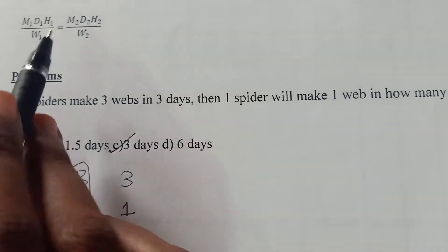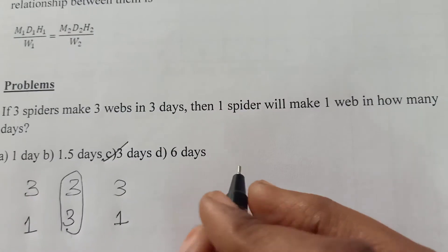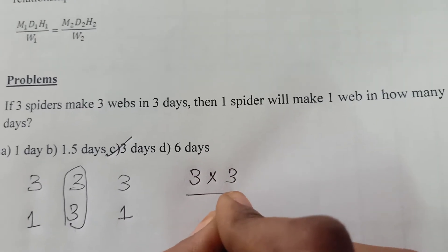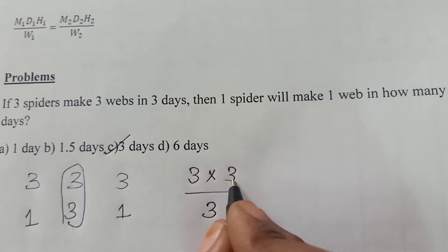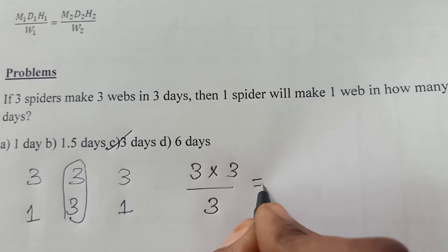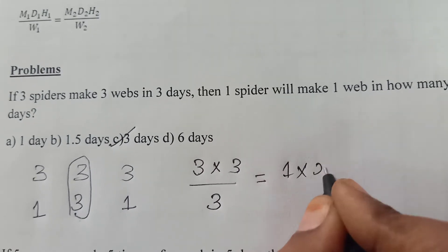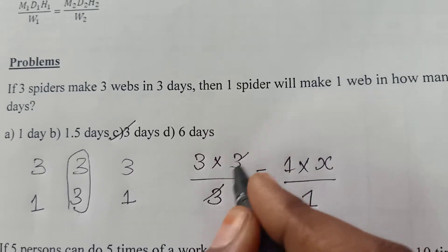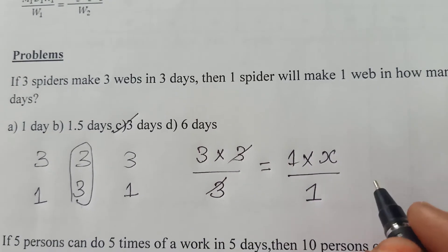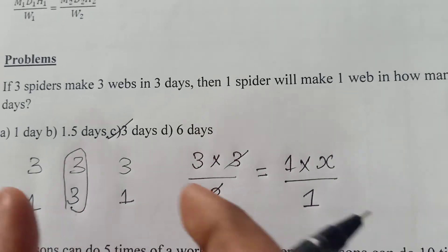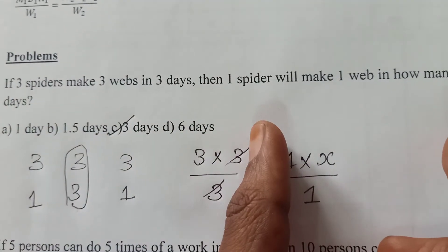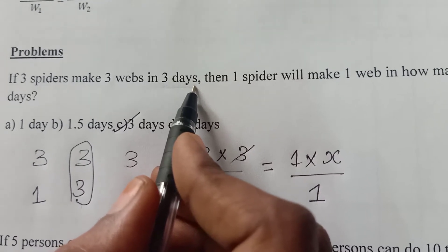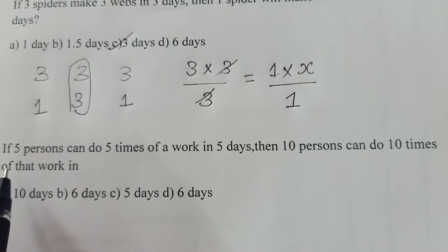We can also solve this by using the formula. That is M1, three spiders, three days, they are making three webs, so M1 D1 by W1 equal to M2 D2, which is not given, and one web is the work. So if we cancel it, the value of x will be 3. We can also find by using this formula, but instead if we have same values, the days and minutes will never get changed because we will be considering the one work time value.